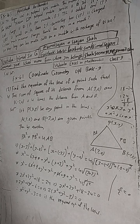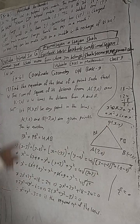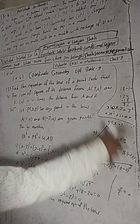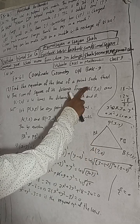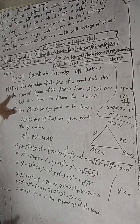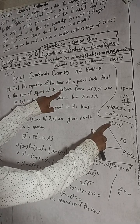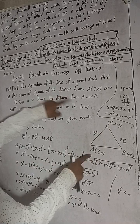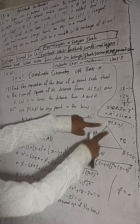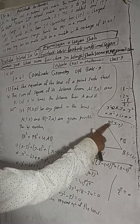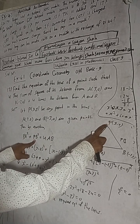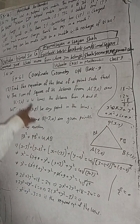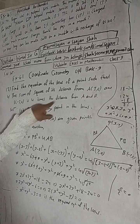Find the equation of the locus of a point P. Let P(x,y) be any point. Points A and B are given points. The sum of the square of the distance: PA² + PB² is equal to four times the AB distance. So PA² + PB² = 4·AB.